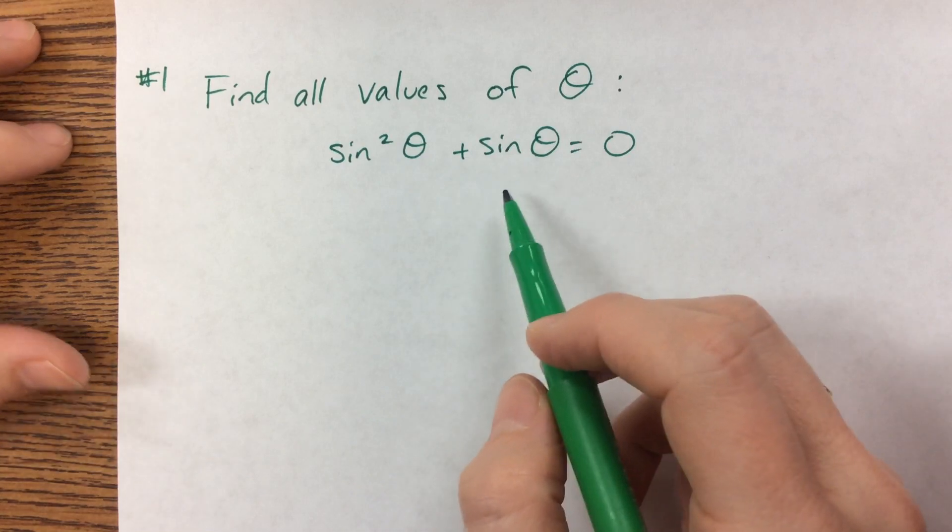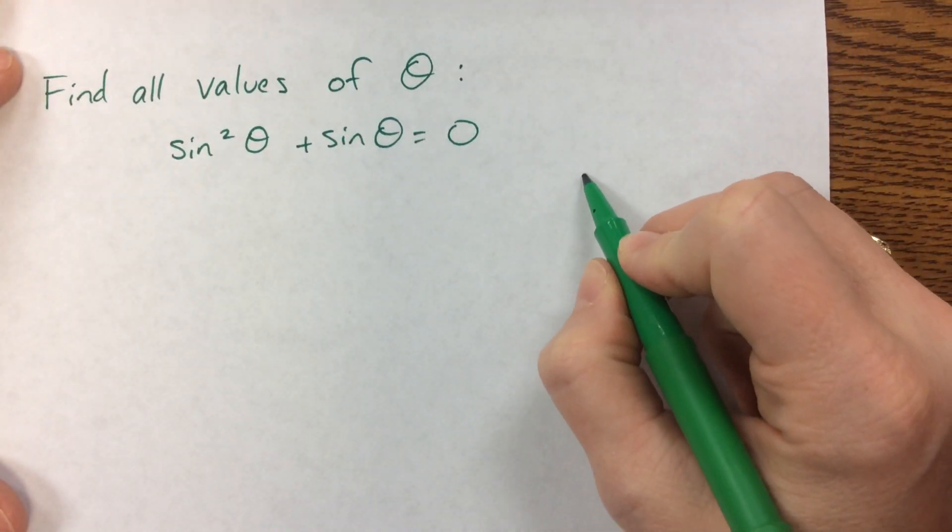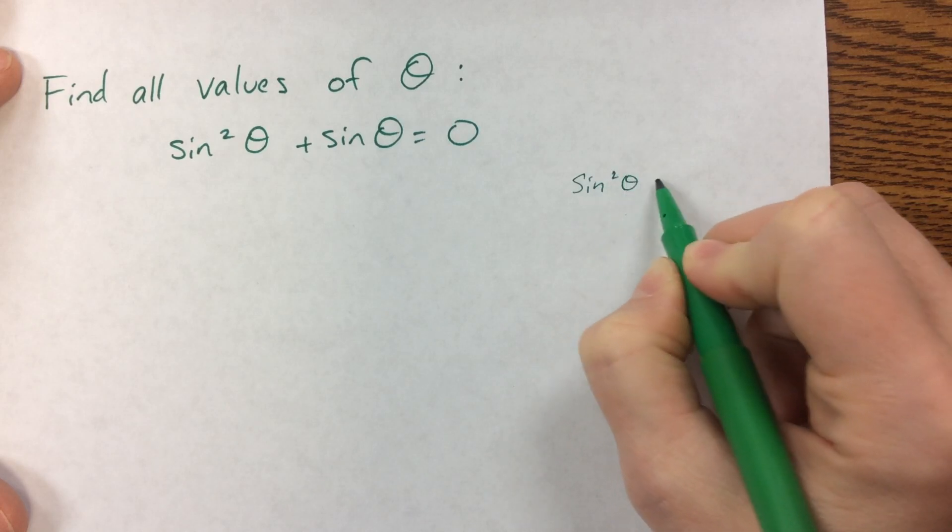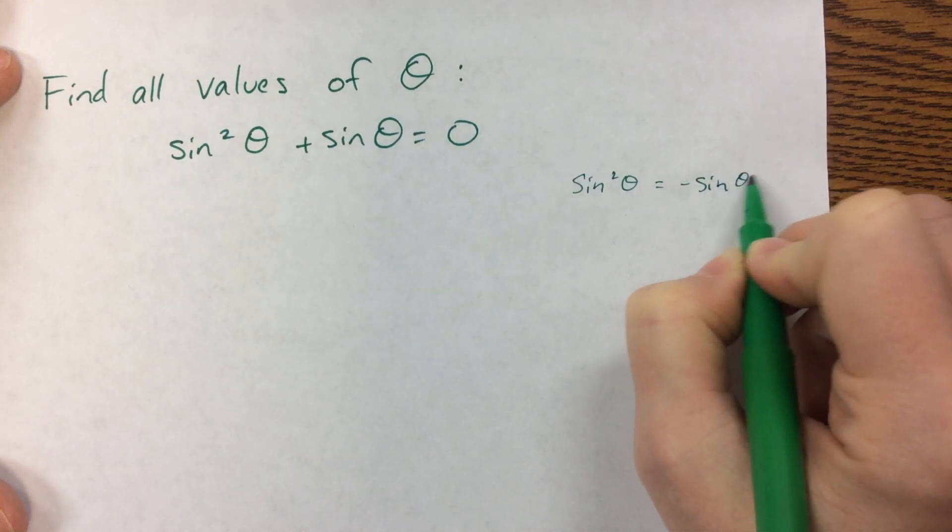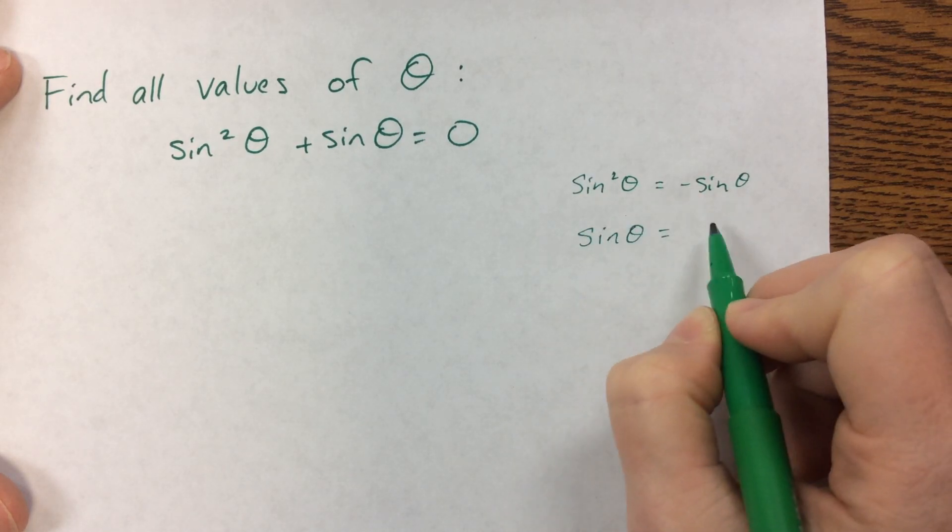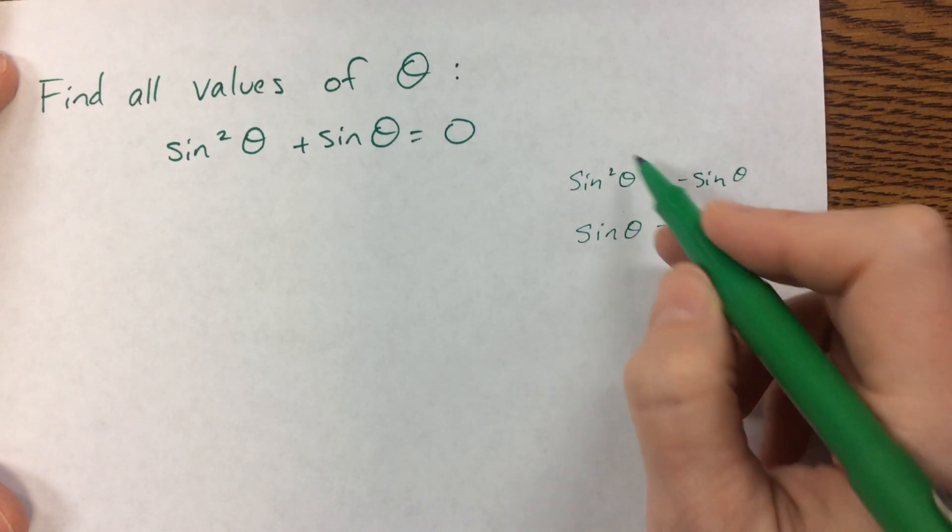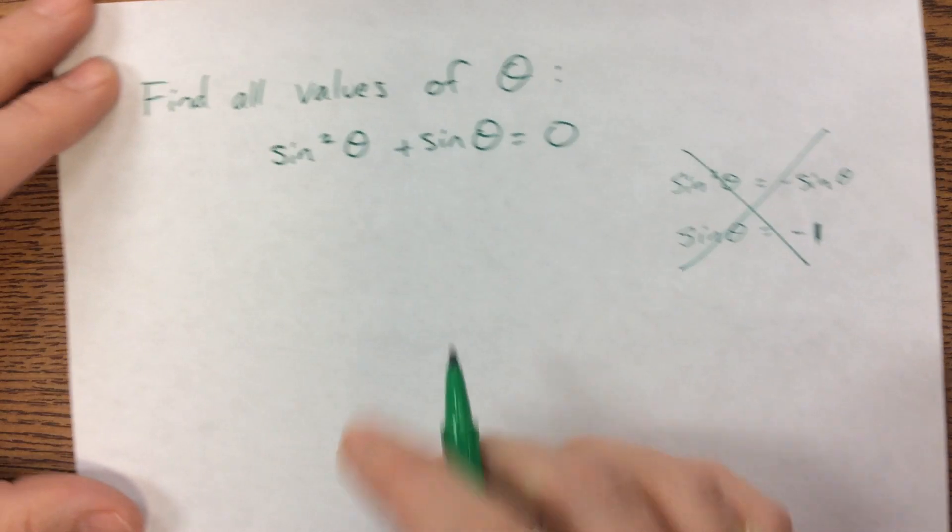Be very careful. Here's what you don't do. If I say, sine squared equals negative sine, I can then divide through by sine, and I get sine theta equals negative one. If I do that, I end up losing an answer. So don't just divide through like that.